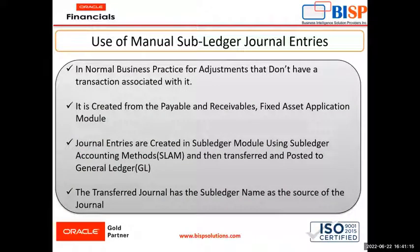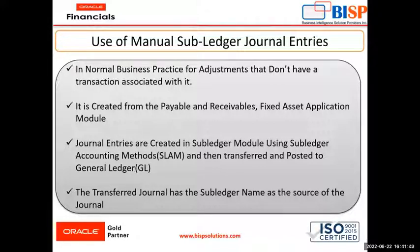Use of Manual Subledger Journal Entries. In normal business practice, for adjustments that don't have a transaction associated with them, they are created from Payables, Receivables, Fixed Assets Application Module. General entries are created in the Subledger Module using SLAM, then transferred and posted to the General Ledger. The transferred journals have the Subledger name as a source.